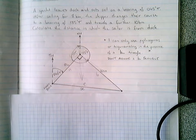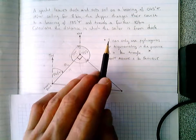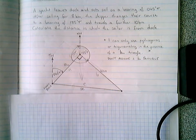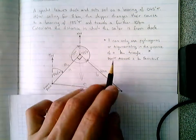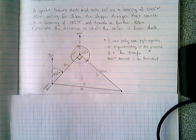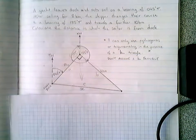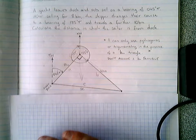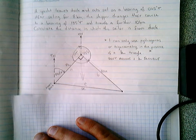Now we cannot assume that this is a right angle triangle. I can only use Pythagoras or trigonometry in the presence of a right angle triangle. Do not assume a right angle triangle. So how have I got this right angle being 90 degrees? Well, what I used was the U rule to do that.